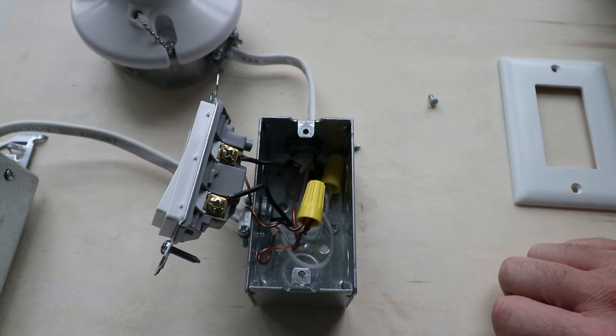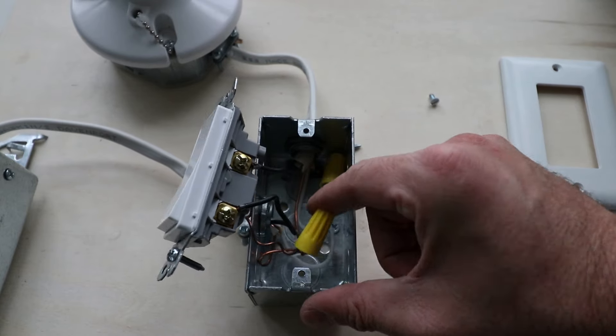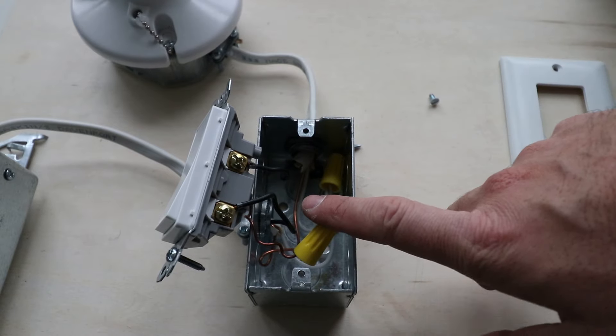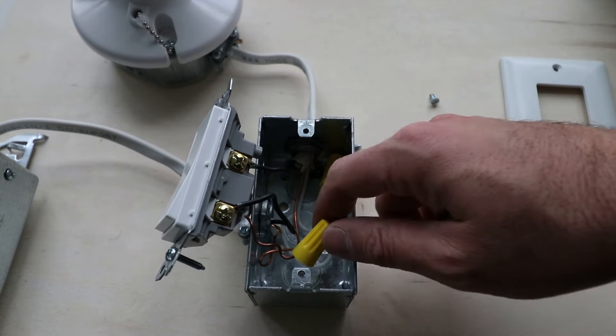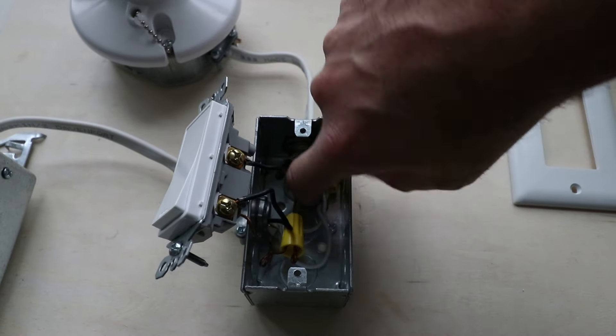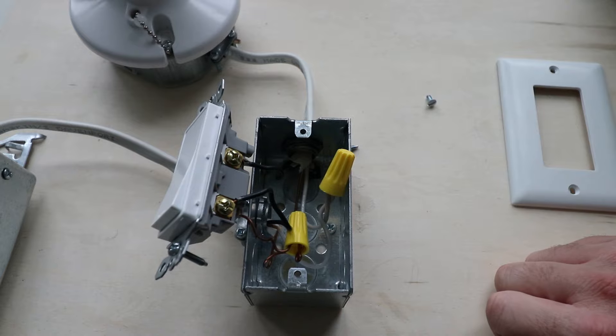And now what we want to know is do I have a neutral wire in here or how to identify the neutral wire? Well, if you open up your electrical box and you see a white wire in there like we've got, see this right here? That means that you do have a neutral wire.